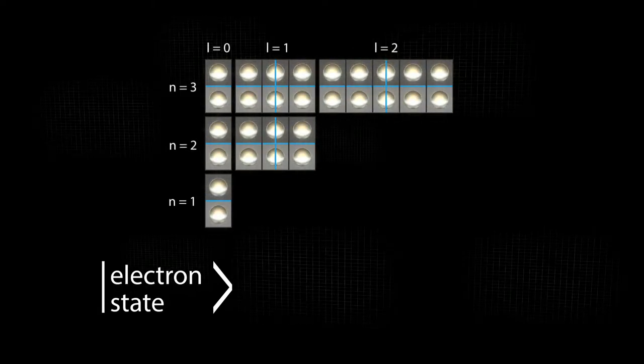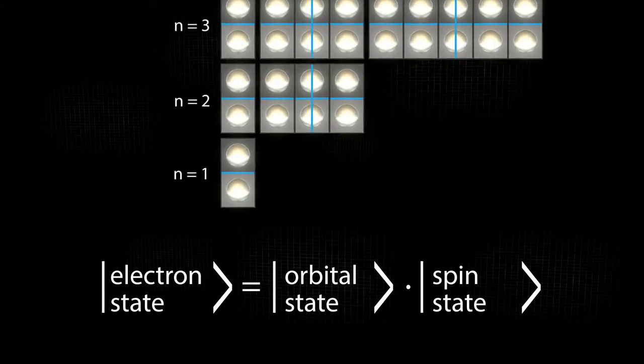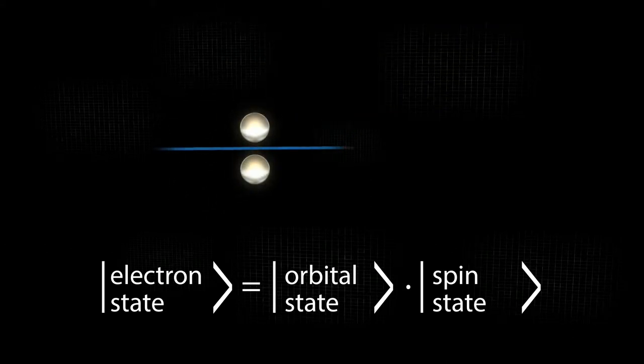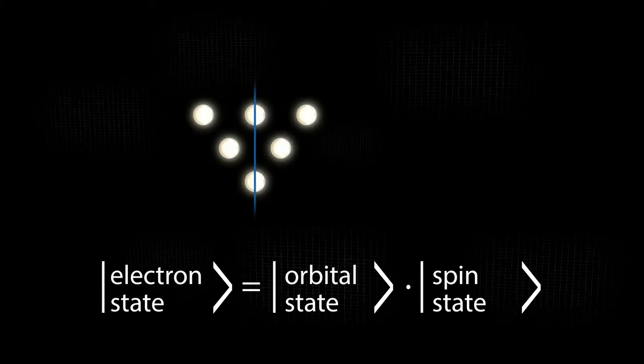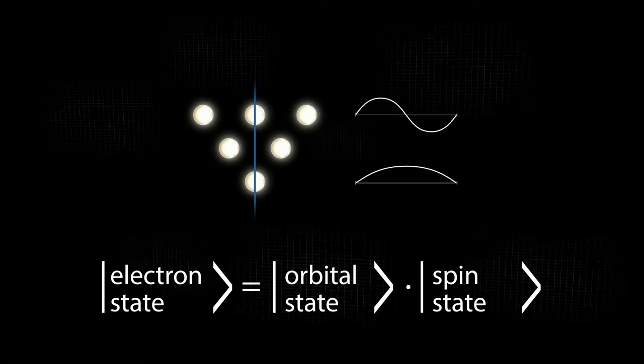An electron state combines position and spin state. Both components can be derived from the spectrum of a guitar string. Let us analyze the fundamental frequency and the first overtone. All other overtones follow the same model.